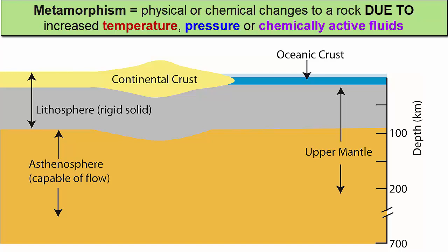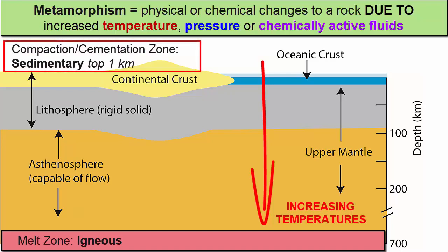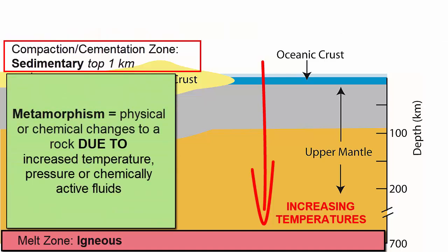How much pressure and temperature? What kind of changes? If a rock is subjected to so much heat that it fully melts, it becomes magma and is igneous, so metamorphic temperatures have to be lower than that. If surface sediments are subjected to a little heat or pressure, or cool fluids, just enough to compact or cement sediments or leave crystals in pockets or holes, it's sedimentary. So metamorphic rocks sit in the zone between these two environments.